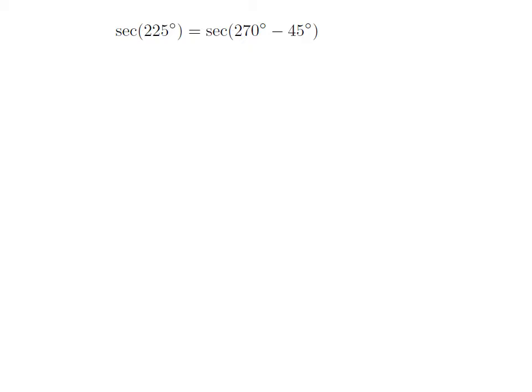As 225 degree is equal to 270 degree minus 45 degree, so secant of 225 degree is equal to secant of 270 degree minus 45 degree.